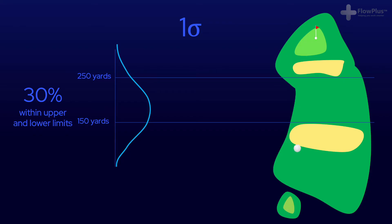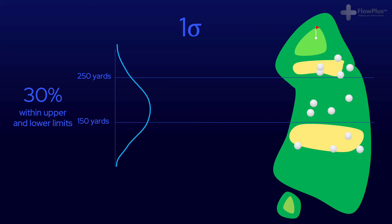A beginner is likely to hit the ball all over the place with little consistency. Some shots go too far, some come up too short, leading to difficult shots, penalties and an overall stressful round with no predictability. A beginner may have a golf swing — a process — which is one sigma capable. This statistically means that within the upper and lower limits, the golfer will play within these limits roughly 30% of the time, and 70% of the time they'll be outside these limits. For example, if the limits are between 150 and 250 yards, this is how the results could look.